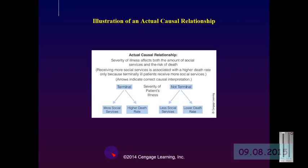When we look at this slide, we can see that by adding another variable to our research equation — in this case whether or not the severity of the illness is terminal or not terminal — we can see that people who are terminal in their illness are receiving more social services and are having a higher death rate. Both of these things are happening because they have a terminal illness. Those who are not terminal receive less social service on average and also have a lower death rate.